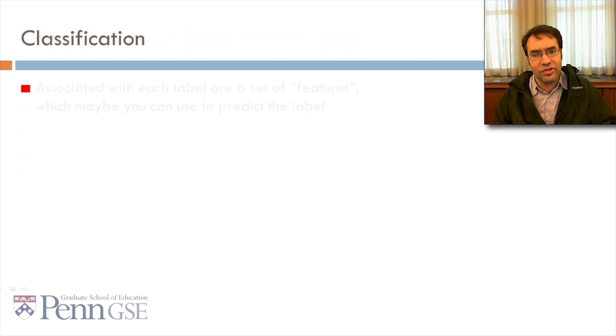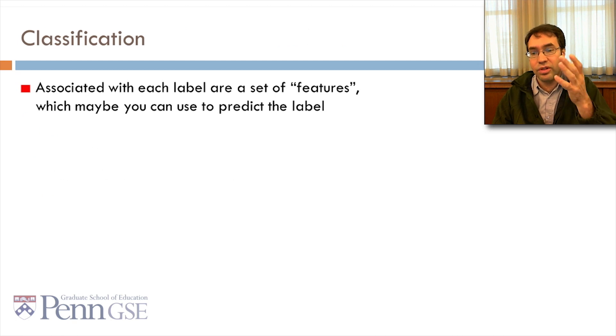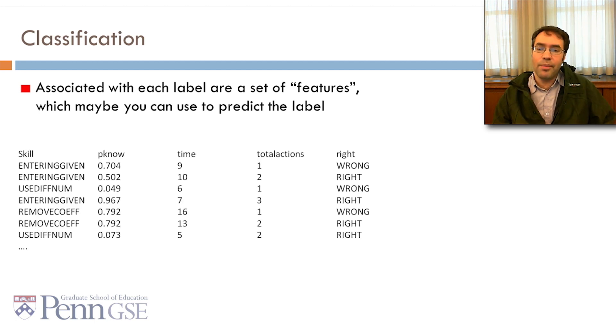In classification, associated with each label are a set of features, the predictor variables, which maybe you can use to predict the label, the predicted variable. So in this example, maybe you want to predict if the student is right or wrong, and you can do that from the pinot, probably the student knows the skill, the time taken for the action, the total number of student actions, and maybe the skill too.